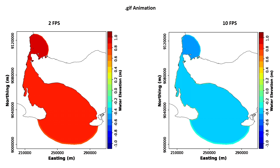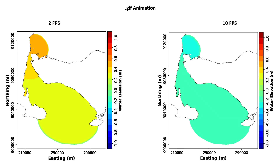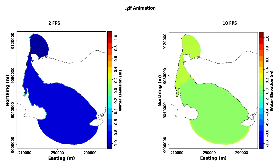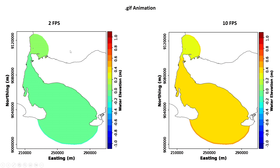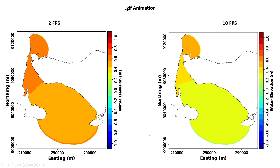Hello everybody, welcome to another tutorial video. In this video I would like to show you how to create a GIF animation using Python. This is the final result: the image on the left has two frames per second, and the image on the right has ten frames per second.